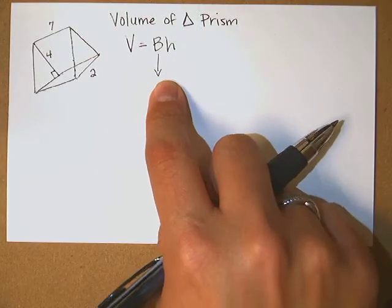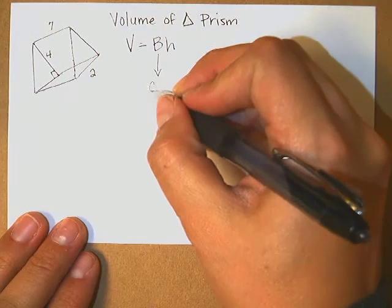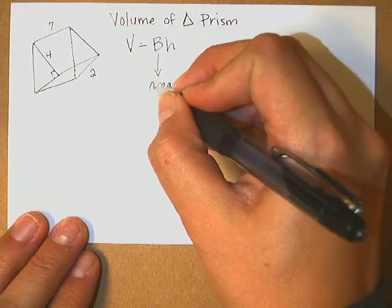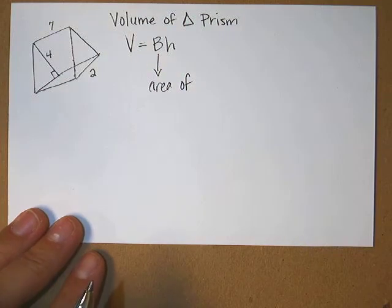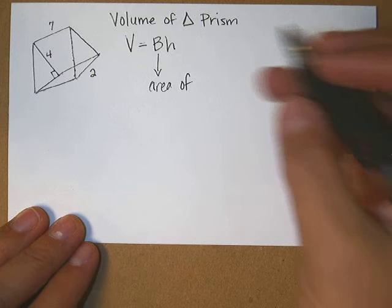Capital B stands for area of the base. Area. What kind of base does my triangular prism have? Triangle. That's why it's called triangular prism.